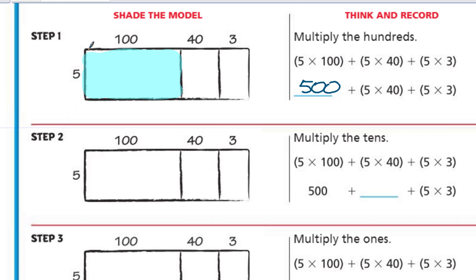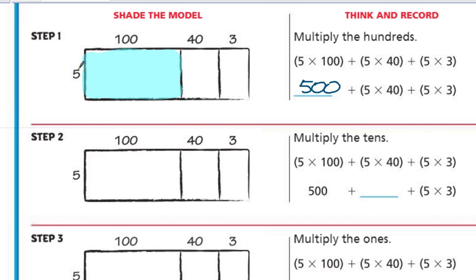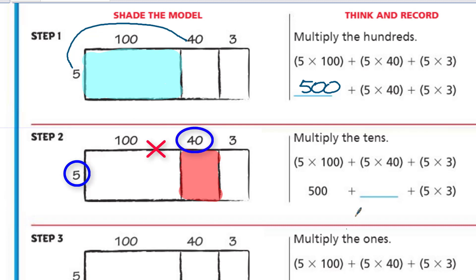Now we're going to take the 5 times 40. We need to shade the next section, and that's going to be this one right here. We have 5 times 100, which was 500, plus now we have 5 times 40. And everybody knows that is 200, because 5 times 4 is a simple fact that gives you 20, plus one more power of 10.